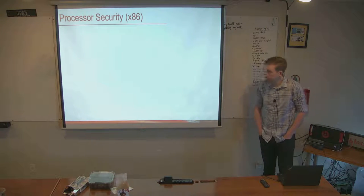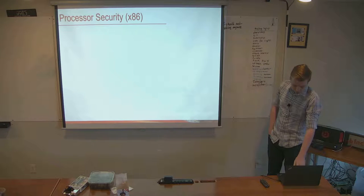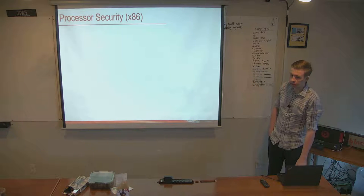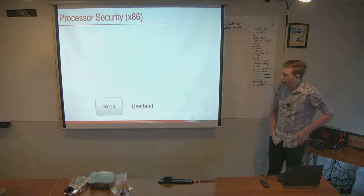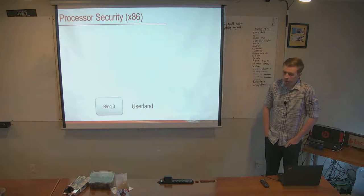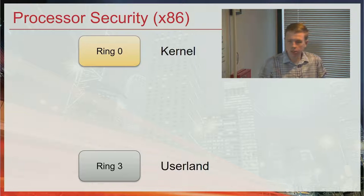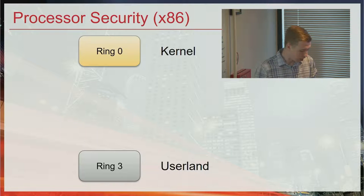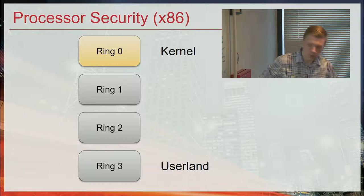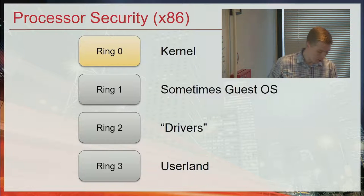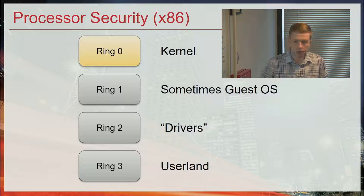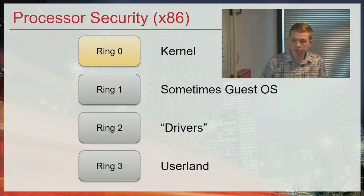The model most people are familiar with is the x86 model, where there are different rings with different security levels. We have ring 3, which is the unprivileged user land, and ring 0, which is the privileged kernel. So the secrets go in the kernel, and everything untrusted goes in the user land. There's also ring 1 and ring 2, normally for guest operating systems or drivers, but they aren't actually used in modern systems, so we can essentially ignore them.